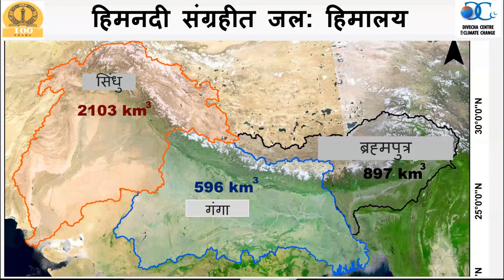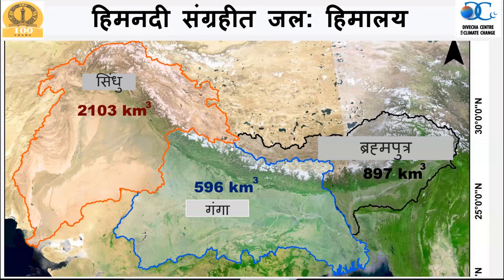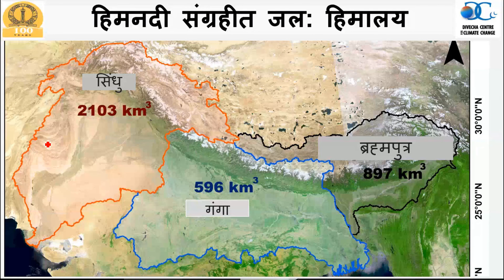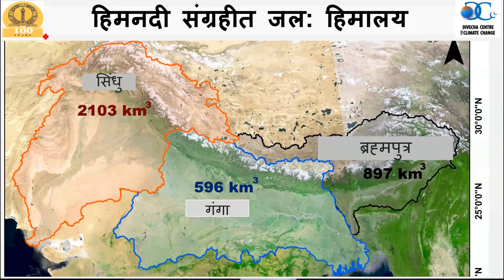The important point is that the Indus River has the maximum amount of glacier terrain and glacier stored water, which is approximately 2000 cubic kilometers. Then it is the Brahmaputra, which is around 900 cubic kilometers, and then around 600 cubic kilometers in the Ganga river basin.